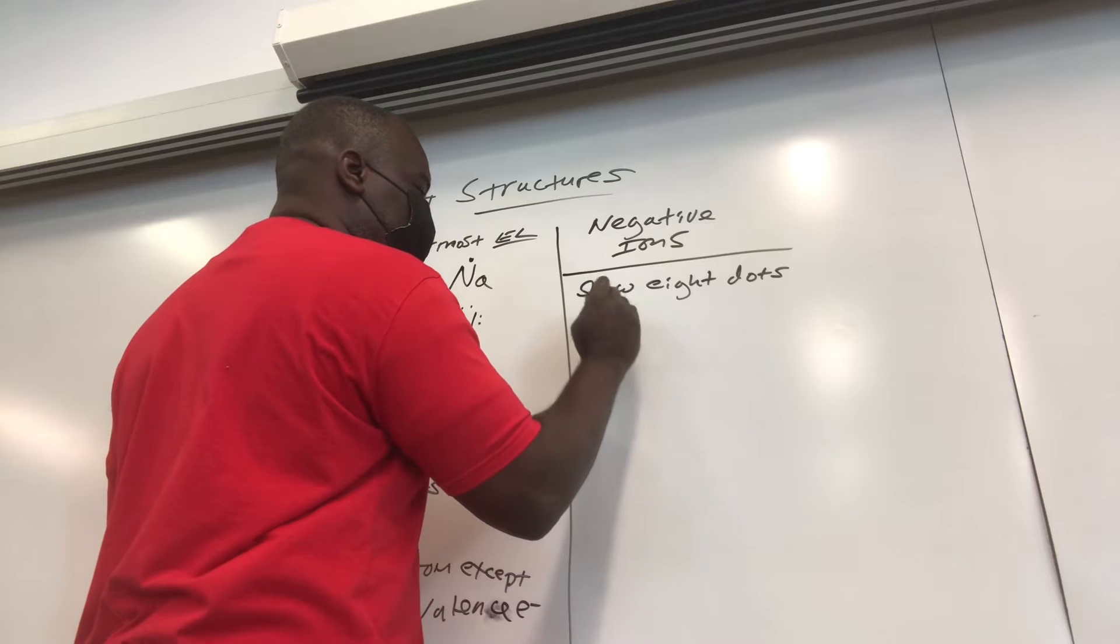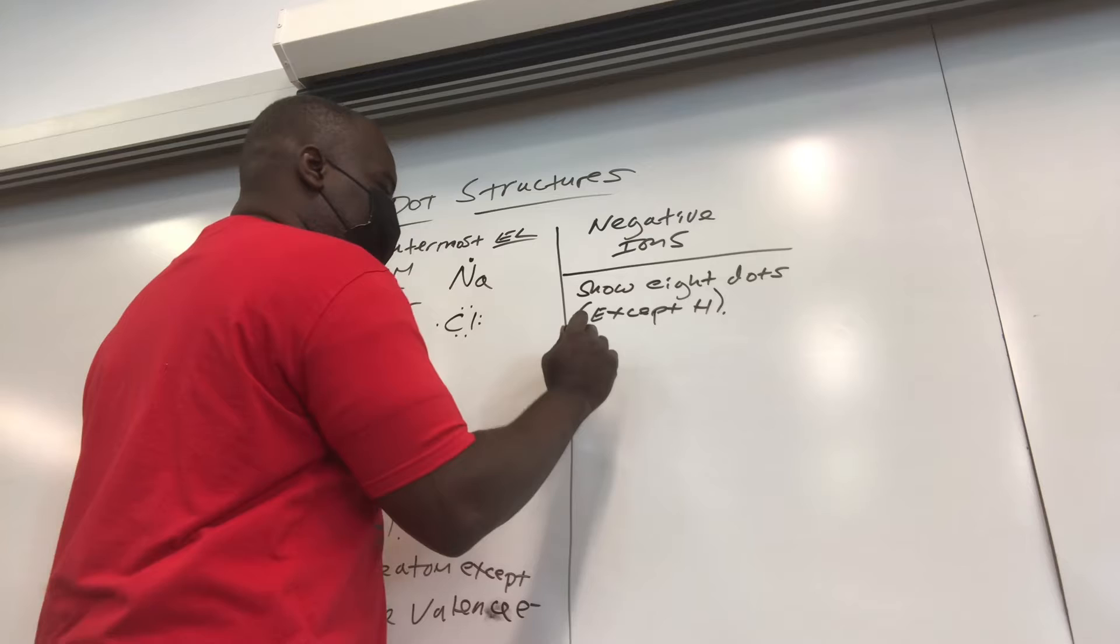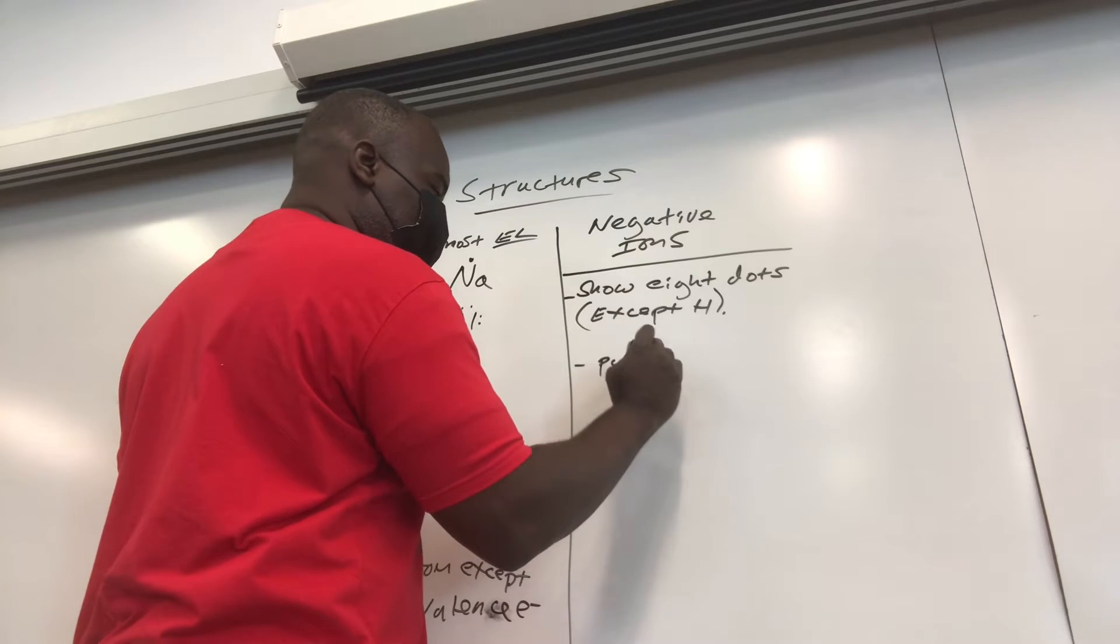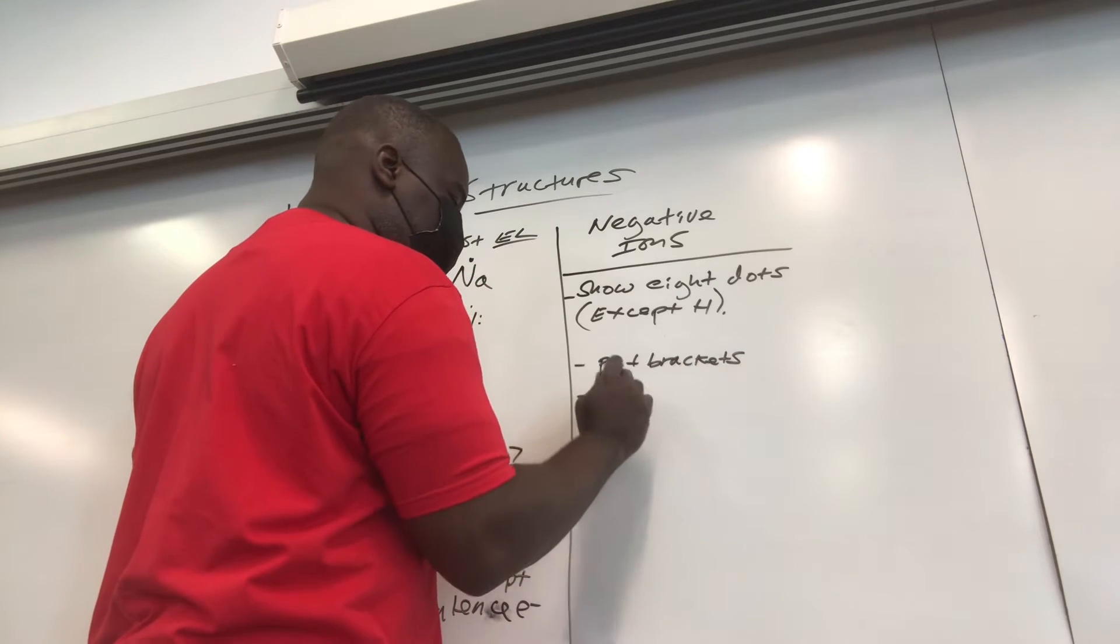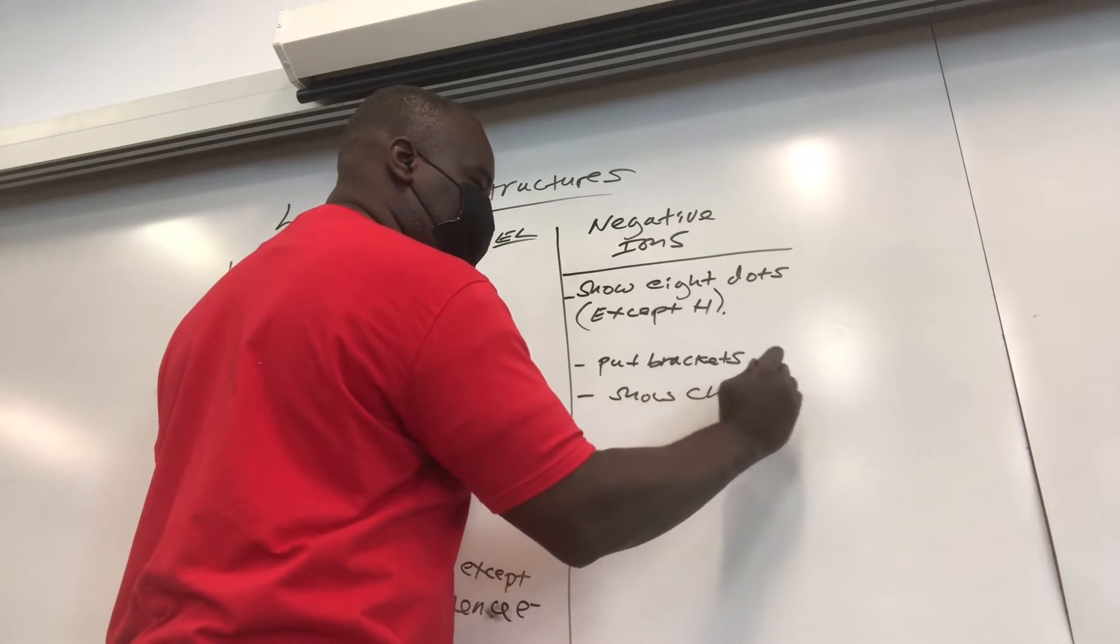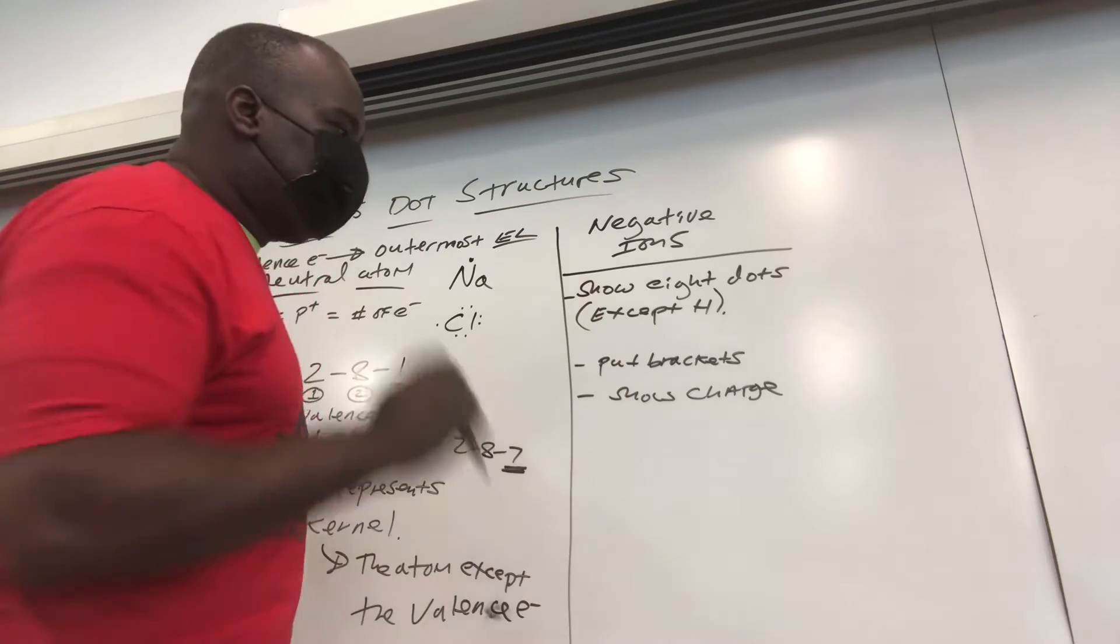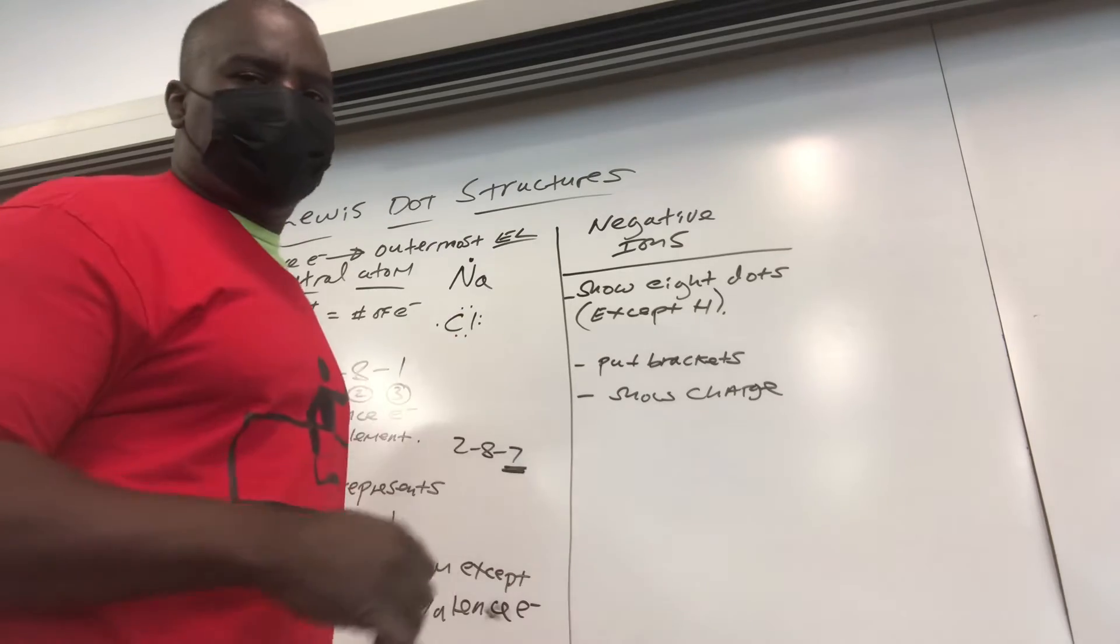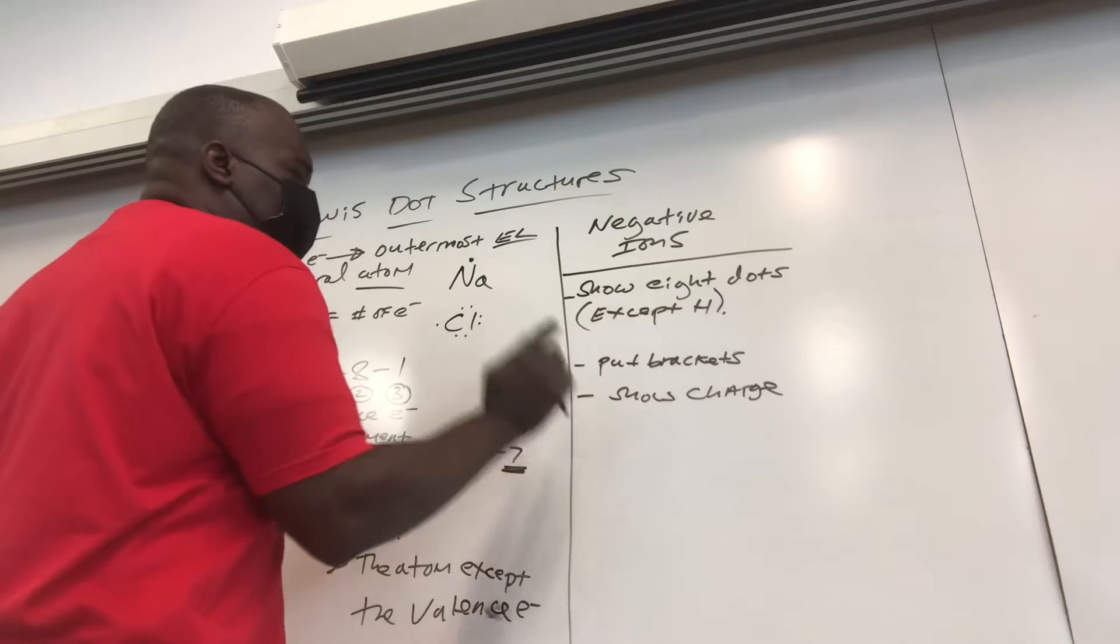You put brackets, and you show your charge, people. Don't forget the charge. If it's an ion, you must carry a charge. If it's a negative ion, you've got to show the negative charge. I've seen previous exams where students did everything correctly, put the 8 dots, put the brackets, forgot the charge, and they didn't get any credit.